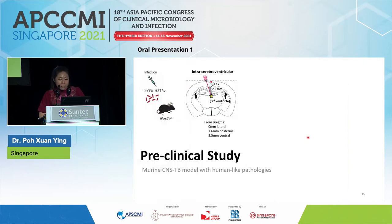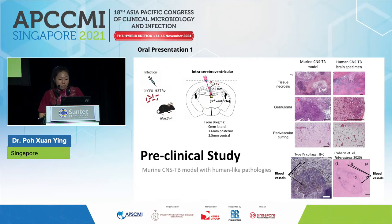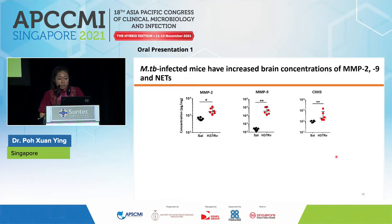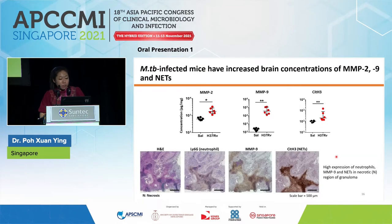To create the murine CNS TB model, I infected NOD-SCID knockout mice with H37Rv into the third ventricle. These mice develop brain pathologies similar to those in humans, including tissue necrosis, granuloma formation, and perivascular cuffing. More importantly, these mice also show blood vessel formation around the granulomas, similar to that seen in humans. Consistent with the clinical study findings, brain concentrations of MMP2, MMP9, and NETs were significantly increased in infected mice, confirmed by immunohistochemical staining showing high expression of neutrophils, MMP9, and NETs in the necrotic region of granulomas.